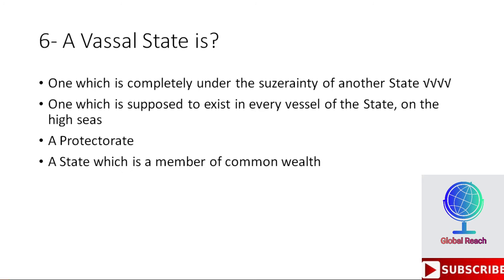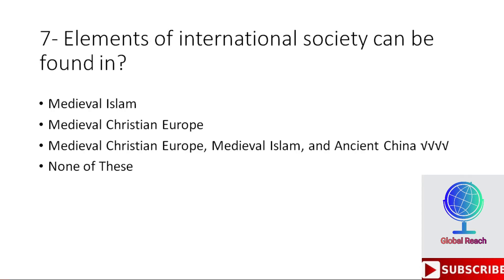Sixth MCQ: A vassal state is — options are: one which is completely under the sovereignty of another state; one which is supposed to exist in every vessel of the state on the high seas; a protectorate; a state which is a member of the Commonwealth. The correct option is the first: a vassal state is one which is completely under the sovereignty of another state.